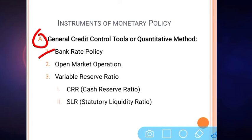From both ends, the government restricts the supply of money in the market. Over a period of time, the money supply in the market becomes regular and the excess money comes back to the government, so the inflation situation returns to normal.